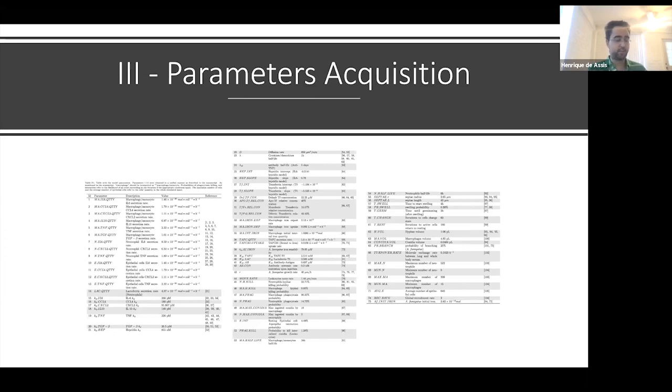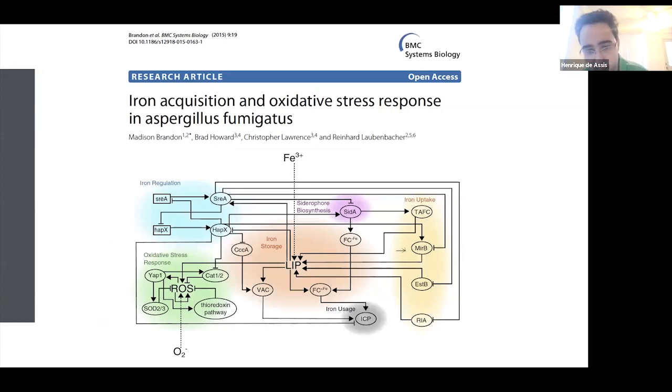For me to show how I got this parameter, we need some background first. A few years ago our group published a Boolean network of iron acquisition and oxidative stress response for Aspergillus fumigatus. In this network, Aspergillus fumigatus acquires iron reductively and via siderophores. They both lead to LIP, which stands for labile iron pool. I will not concentrate on reductive iron acquisition because this is not the main form of iron acquisition. There are papers showing that siderophore iron acquisition is the dominant form during infection.